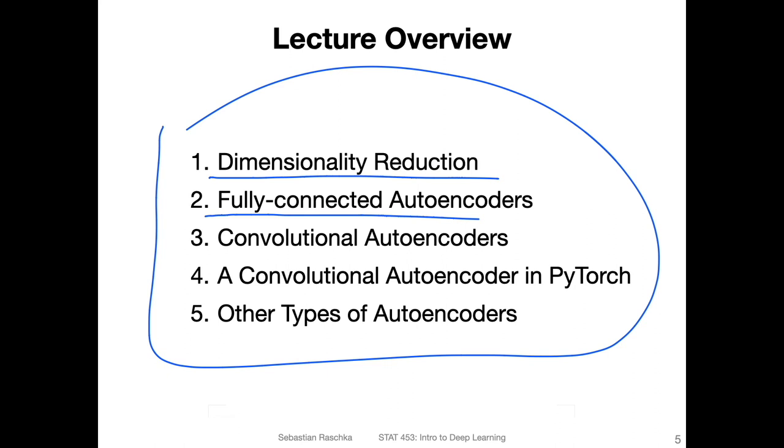Then we will extend this concept to convolutional autoencoders, which work better with images. Then I will show you how we can implement a convolutional autoencoder in PyTorch. And lastly, I will also highlight some other types of autoencoders. One would be the variational autoencoder, which we'll be revisiting in the next lecture.